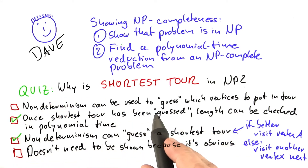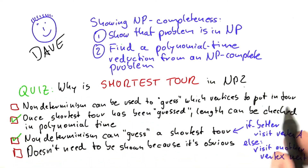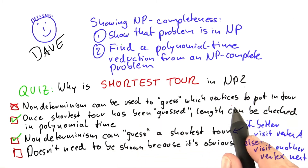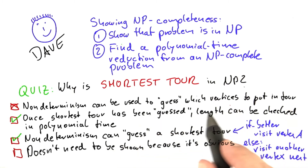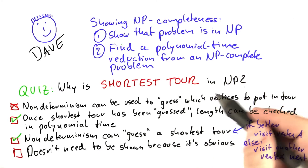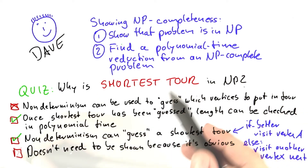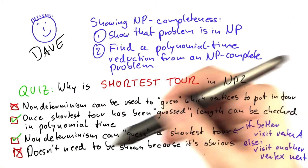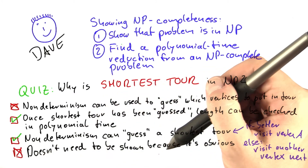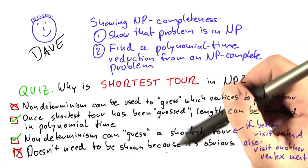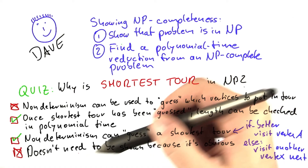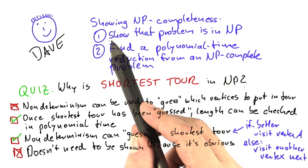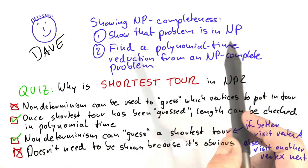Non-determinism can be used to guess which vertices to put in the tour — that obviously doesn't make sense because all vertices are part of the tour. It's the order of the vertices that matters for solving shortest tour. That was easy to see that it's not really a viable answer, but I wanted to point out that even though it might sometimes be obvious, you should always make sure to explicitly show that the problem is in NP.